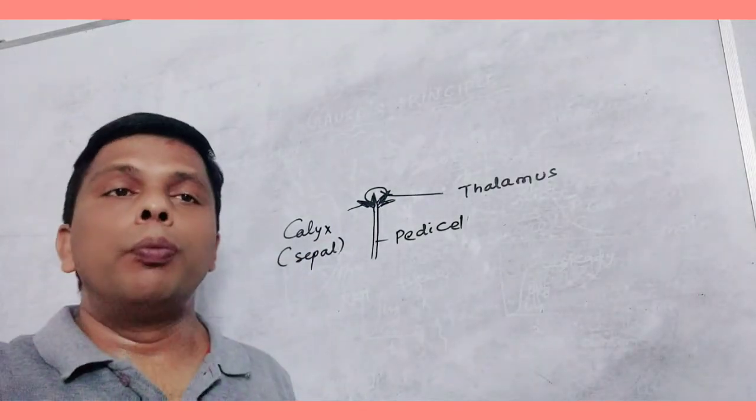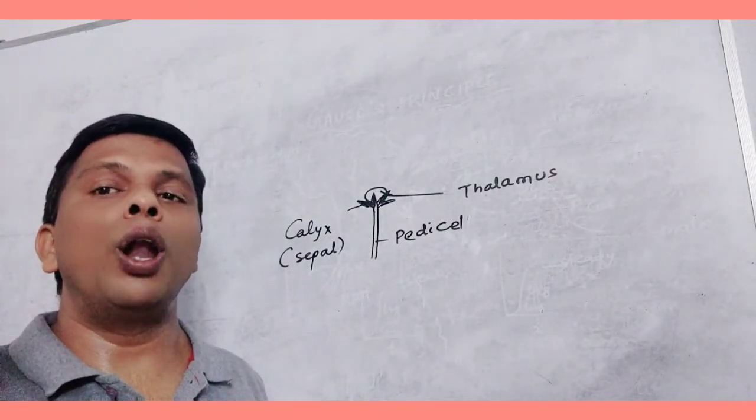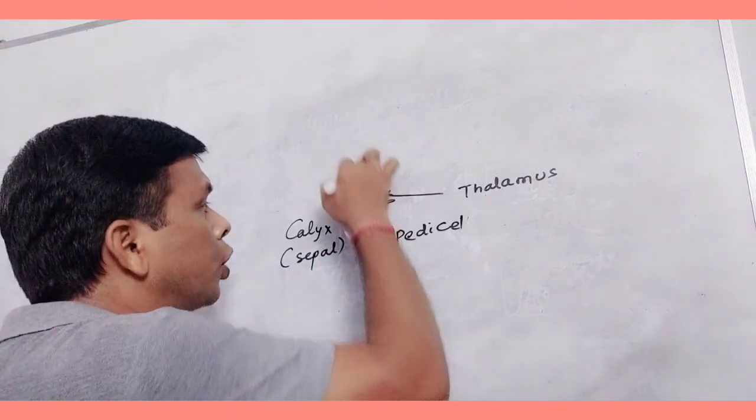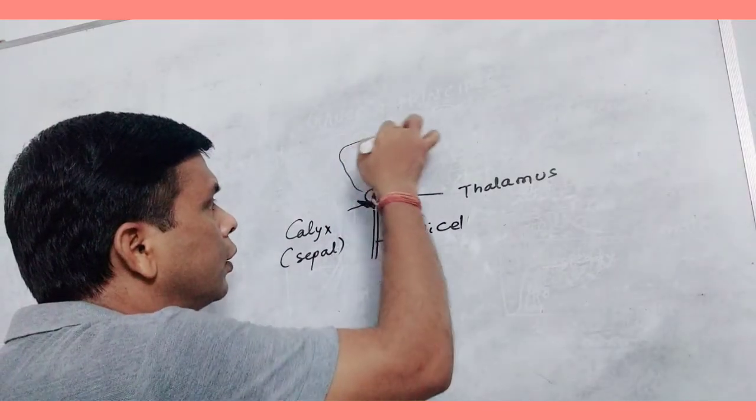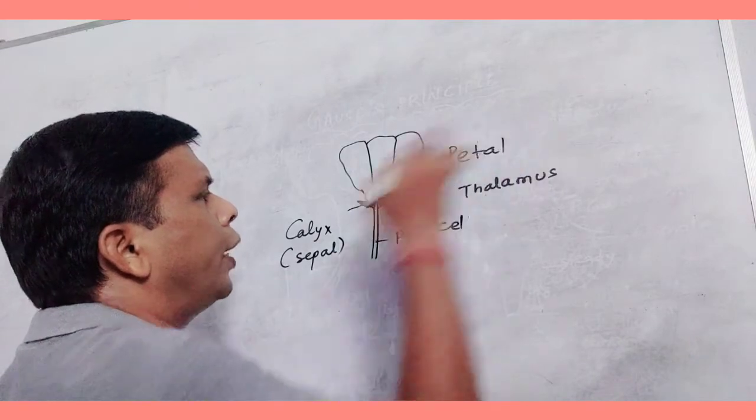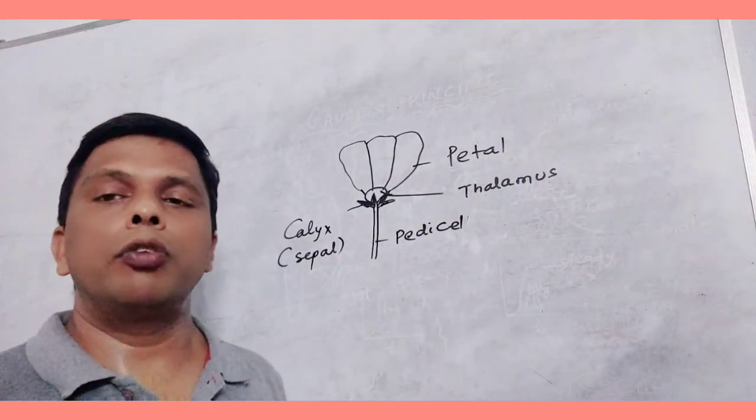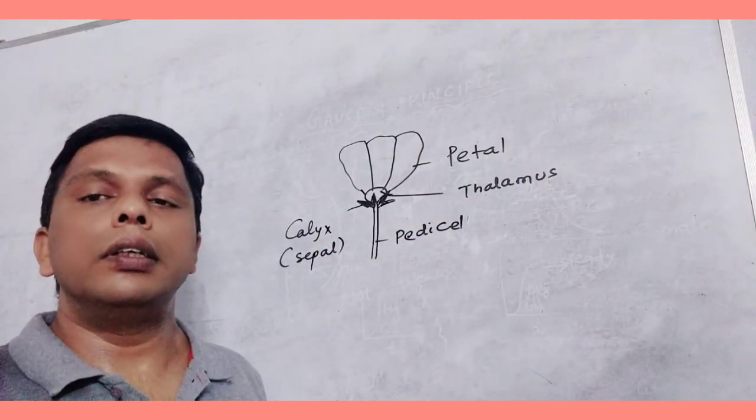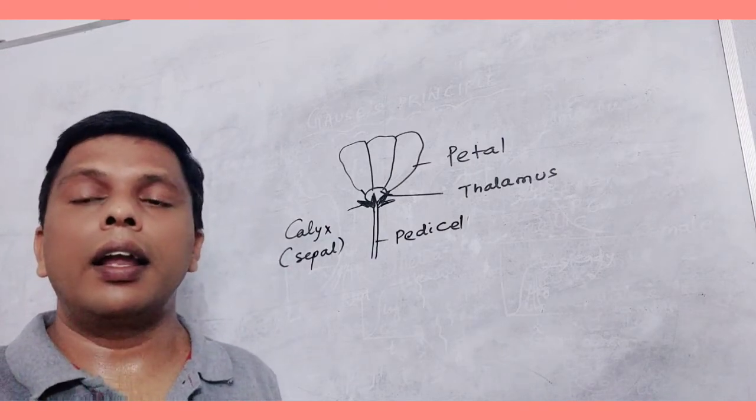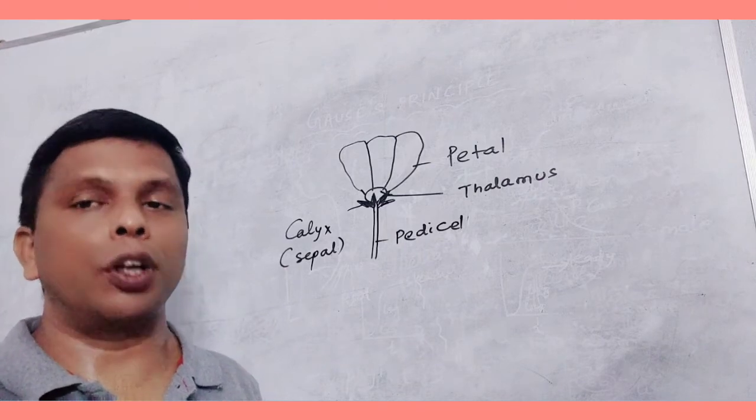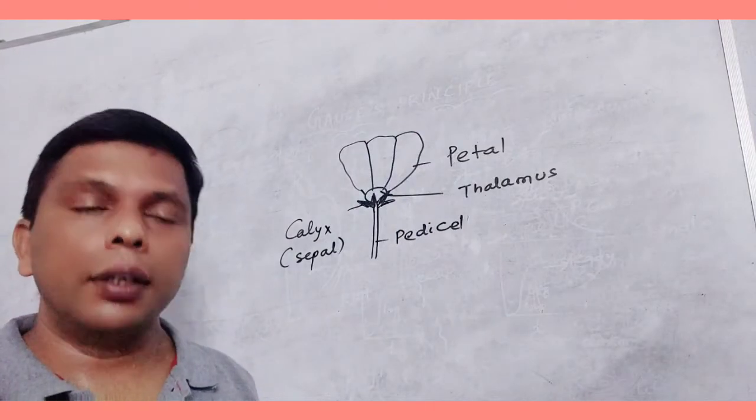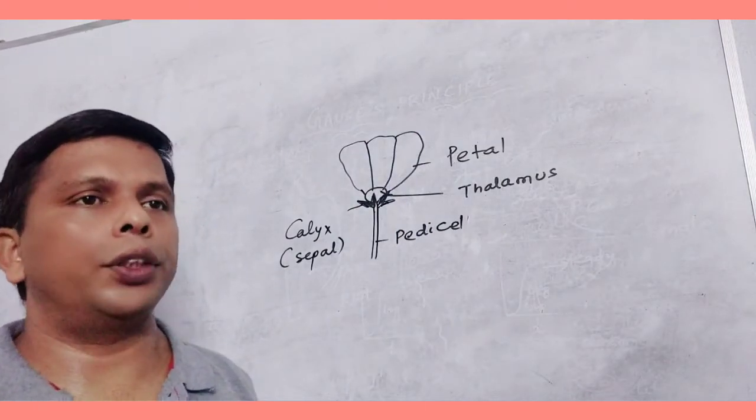Above the thalamus, there are colored units called corolla. The individual units of corolla are called petals. What are the functions? It is meant for attracting insects and animals for pollination of flower. The corolla is very much attractive having different colorations.